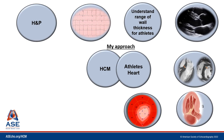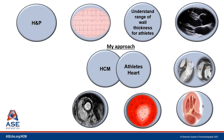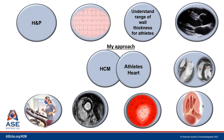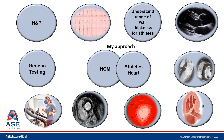We'll look at global longitudinal strain, which is typically normal in athletes and reduced in the area of hypertrophy or fibrosis in patients with hypertrophic cardiomyopathy. We'll rely heavily on cardiac MRI, looking for delayed gadolinium enhancement and evaluating T1 and ECV. Occasionally, cardiopulmonary exercise testing can be helpful to identify limitations in cardiac output in patients with HCM. And if there is a family history with gene-positive HCM, we will use genetic testing in that context.